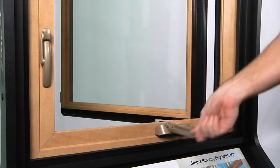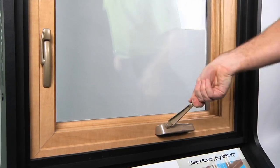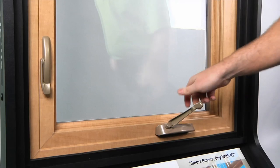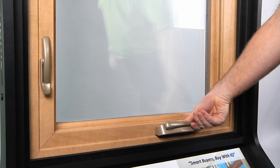IQ casement handles fold down to maintain a clean, low-profile look while providing space for your blinds to operate all the way down the window.